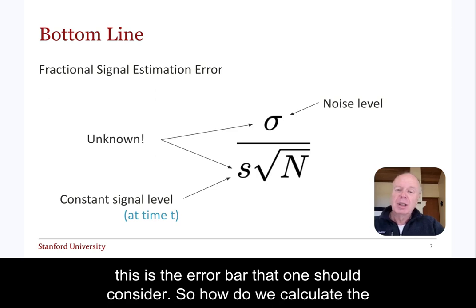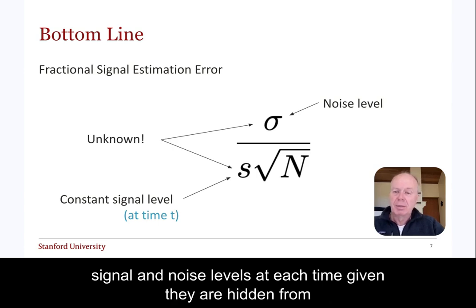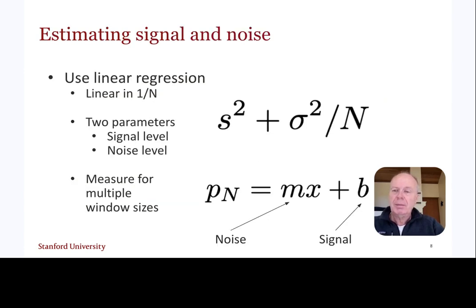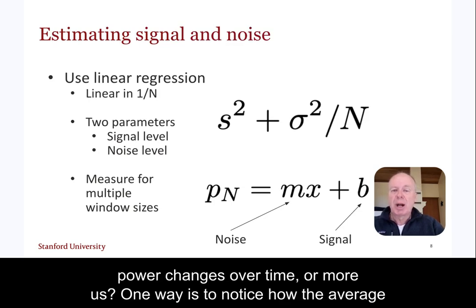So, how do we calculate the signal and noise levels each time, given they are hidden from us? One way is to notice how the average power changes over time, or more precisely, how it changes based on how many trials we average.